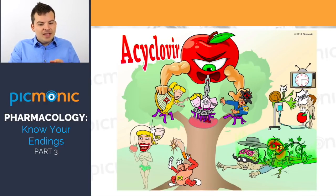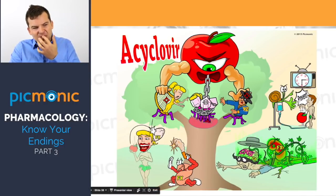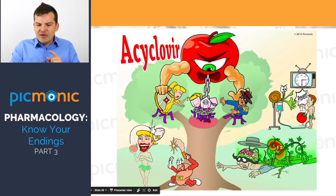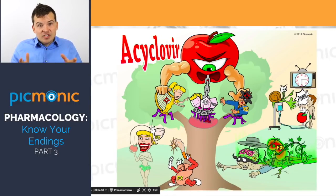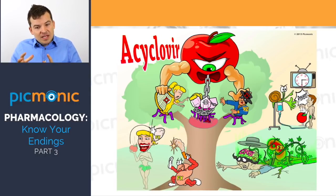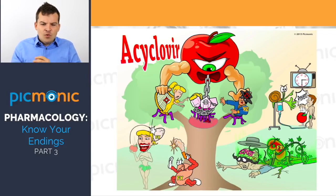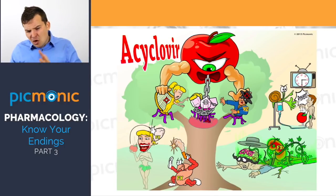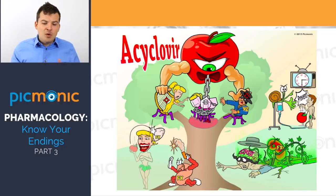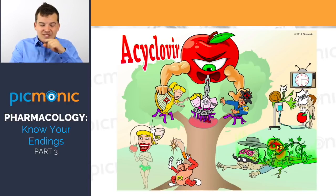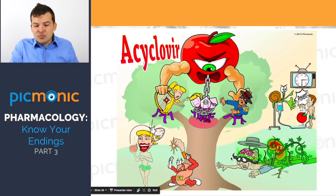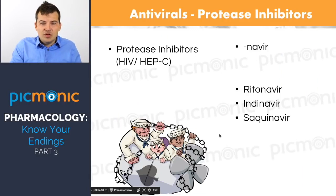What's important to know with acyclovir — it's a somewhat rare question but I see it every now and then — is that it causes, especially in high doses, a crystalline nephropathy. These crystals can build up in the kidneys, especially if given IV, and can cause this crystalline nephropathy. So you want to give it as a slow IV infusion and monitor urine output. Not super common, but if you get that question, it's worth a lot.